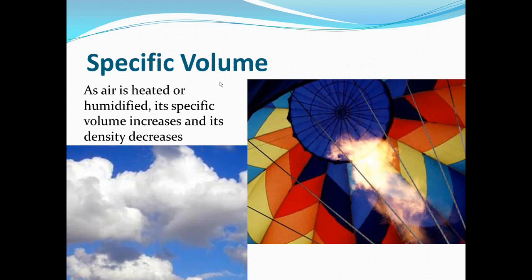Air has a specific volume. If air is heated or humidified, its specific volume increases and its density decreases. That's why clouds float — they have less density because humidity has been added. This is counterintuitive because we're used to adding water to cloth and it gets heavier; but with water vapor, it actually displaces air molecules and causes the air to be lighter. So the space air takes up changes as it's heated or humidified.